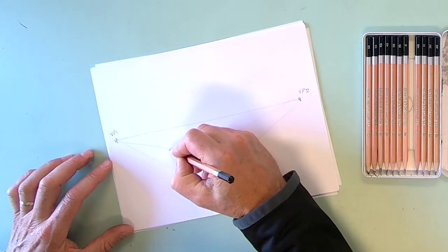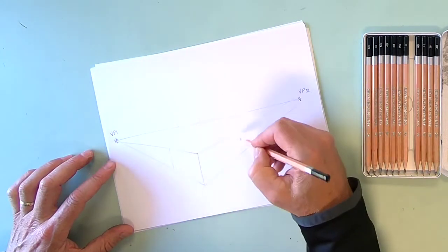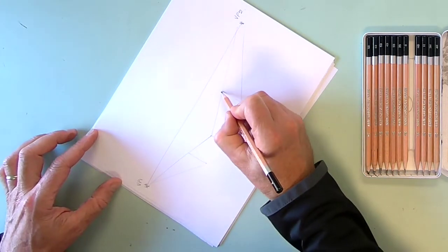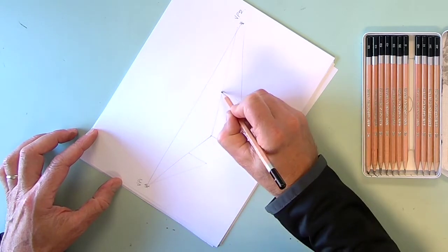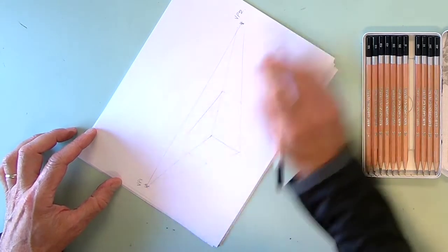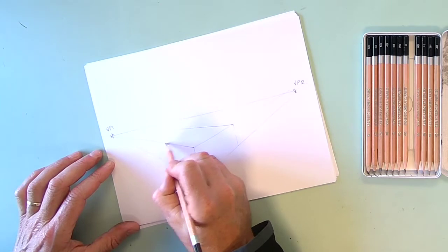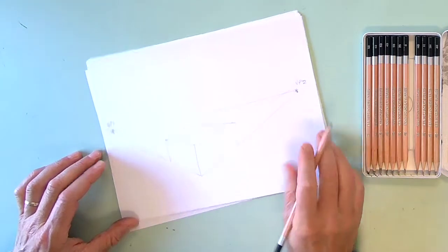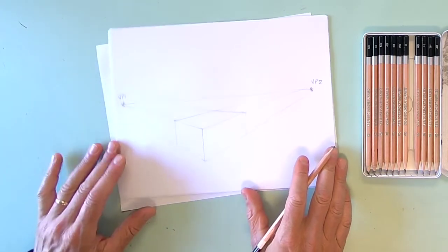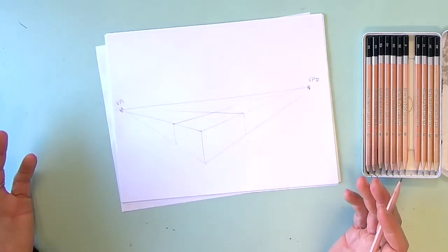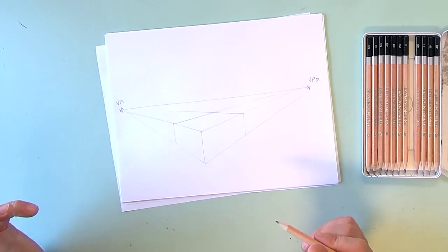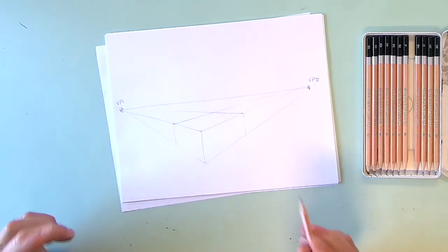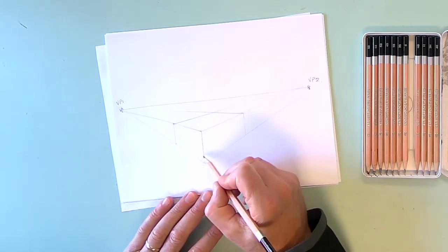Then I'm going to construct some sides to it, and as you know this one here goes to VP1 and this one here goes to VP2. Okay, so there we have a very basic box. So what the next step is to do is that we're going to start cutting it up. So watch how I'm doing this.